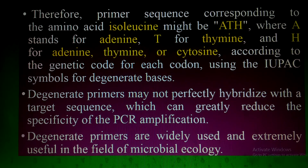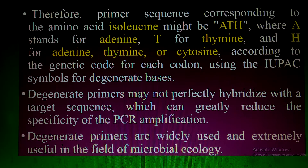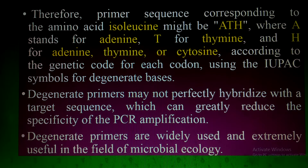For example, for the amino acid isoleucine, the codon is ATH, where A is for adenine, T for thymine, and H represents adenine, thymine, and cytosine according to IUPAC nomenclature. These IUPAC symbols are used for degenerate bases, and I will share those with you. Note that degenerate primers may not perfectly hybridize with the target sequence, which can greatly reduce the specificity of PCR amplification. Degenerate primers are widely used and extremely useful in the field of microbial ecology.